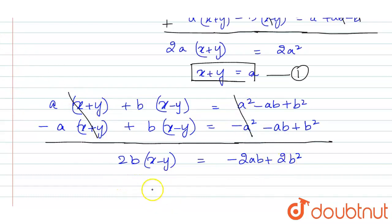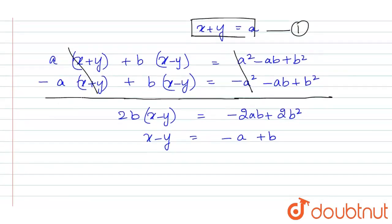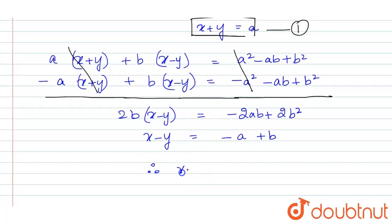Now if we take 2b common from here, we will get x-y = -a + b. That is, therefore, x-y = b-a. And let this be our equation number 2.